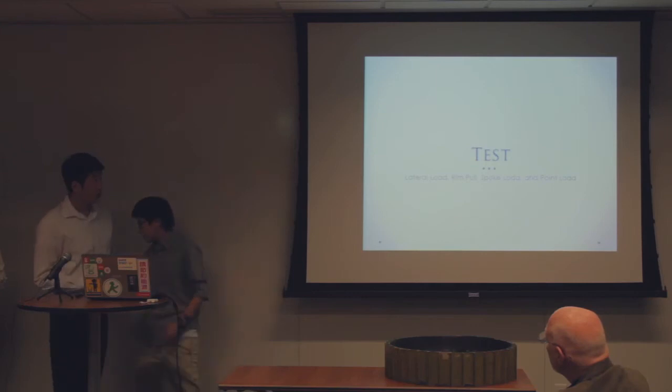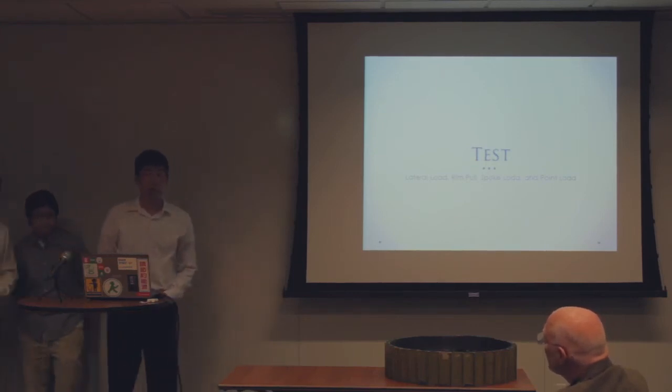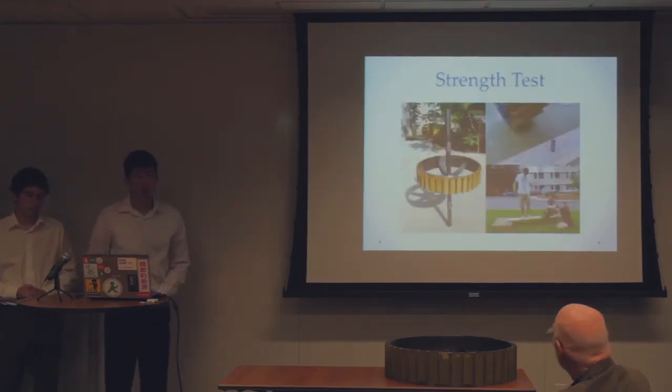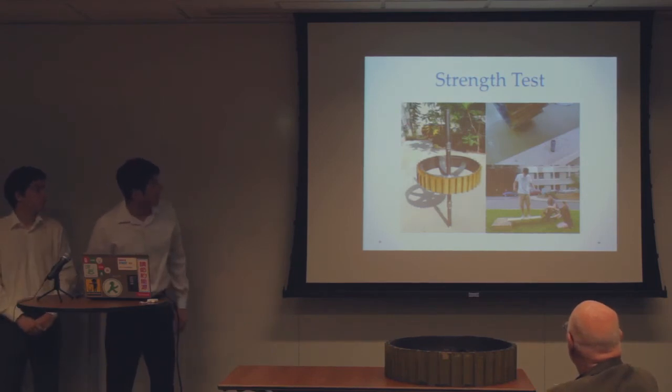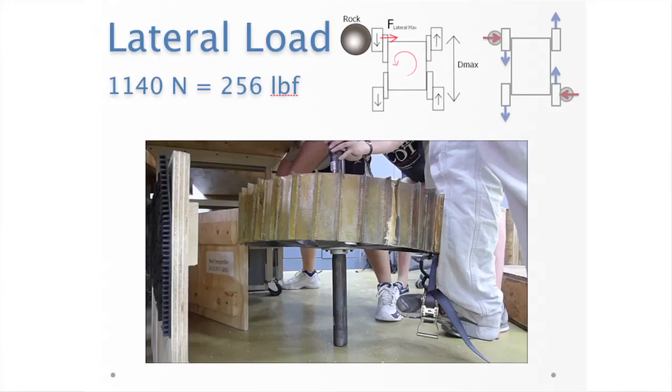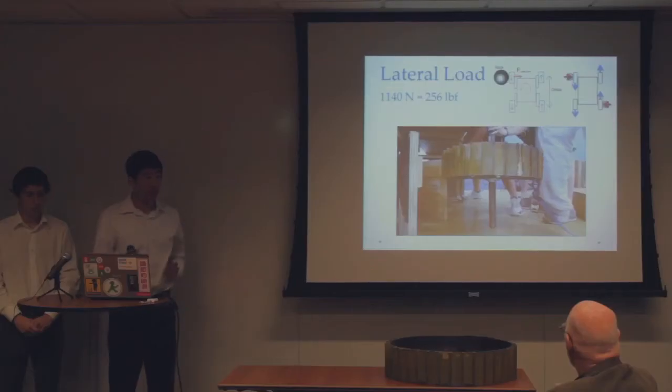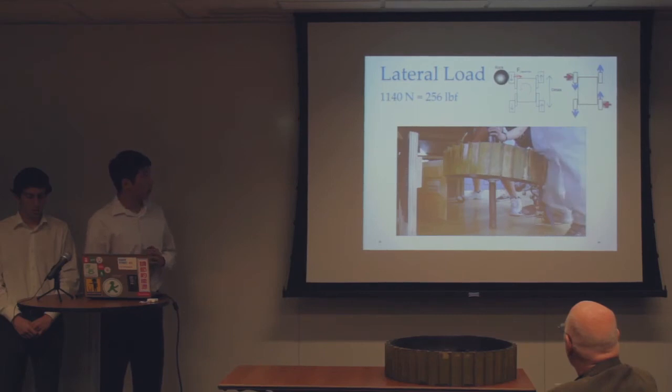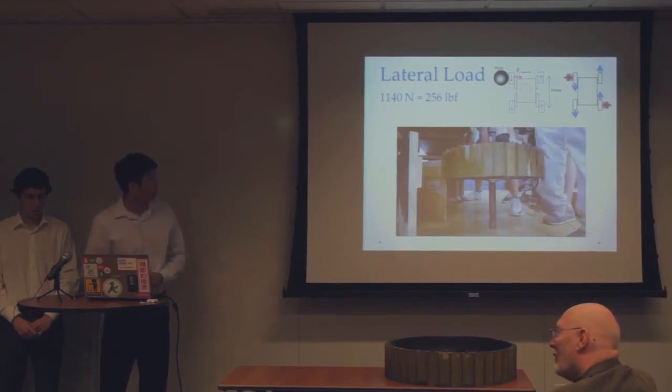So once we put our wheel together and built it, we needed to test our wheels to make sure they survived our loading conditions. We focused on strength testing for basic loading. The first one is the lateral loading, which is simulating the skid steering. We calculated the skid steer load to be 256 pounds on the side. Here is a video of us loading it up.